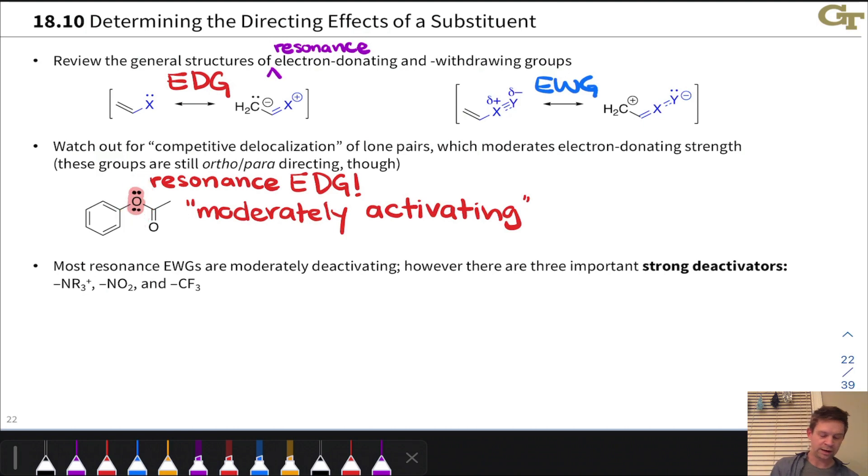Amides, where a nitrogen group is here instead of oxygen, follow the same idea. Amides are moderately activating. They're not as strongly activating as amino groups, but they are still activating groups, and they still direct to the ortho- and para-positions.